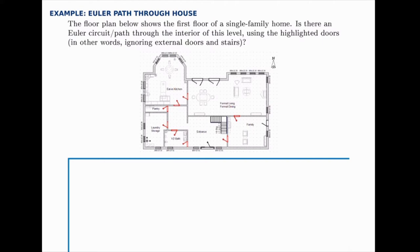It's hard to see this on the floor plan, but if we draw a graph it'll be much easier to answer this question by counting the degree of each node. So let's draw a node for the pantry, one for the kitchen, and one for the laundry. These are roughly equivalent to where they are in the house, but it doesn't have to be perfect.